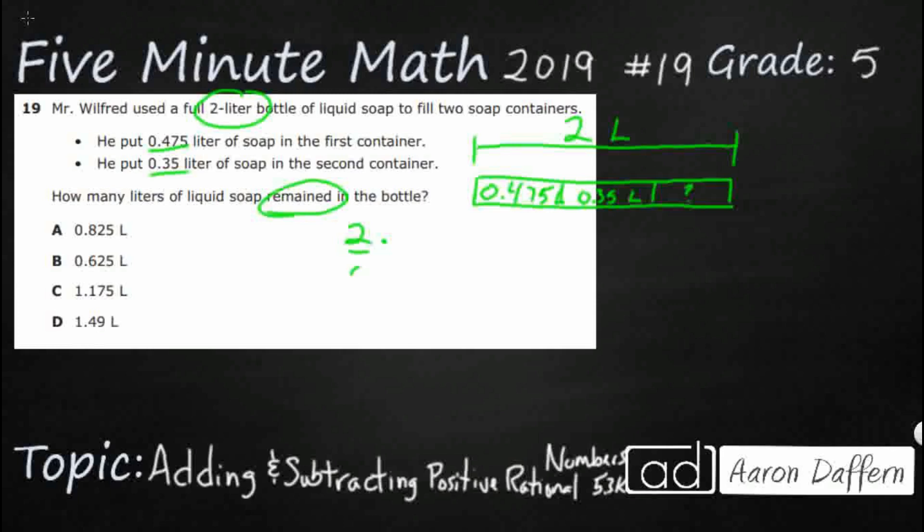We're going to put our 0.475 underneath that. Now obviously if we're going to subtract, we need some digits up there. So next to that 2, we can put some zeros. You can always put zeros in empty spots to the right of the decimal point, and you're going to be fine.